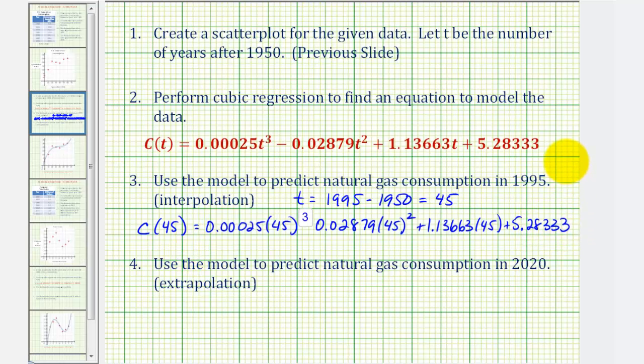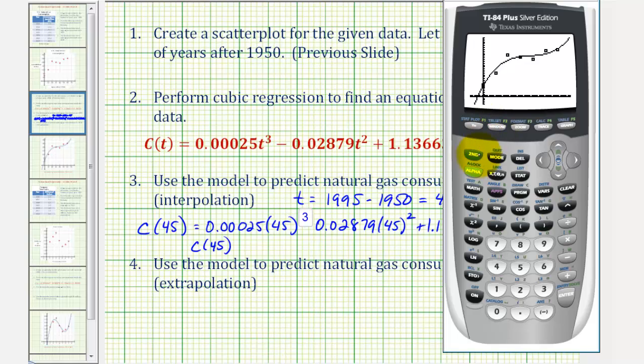But instead of doing this by hand, we're going to go ahead and use the graphing calculator to evaluate this. This is why it's helpful to store the regression equation in Y1. From the home screen, to find C of 45, we can enter Y1 of 45. So we can press vars, right arrow, enter, enter. This brings Y1 to the home screen, and then in parentheses, we'll enter 45. And this will evaluate the function for T equals 45. So our prediction will be approximately 21.2 quadrillion BTUs.